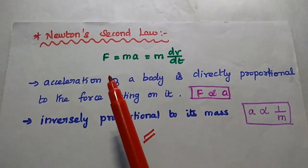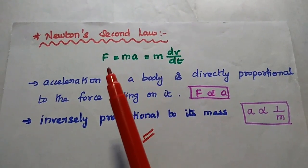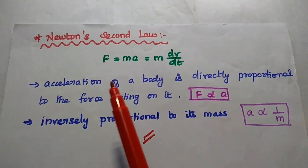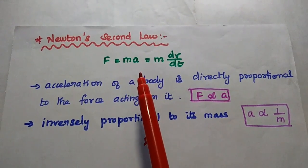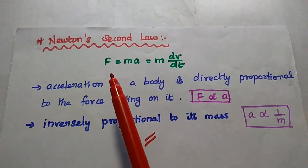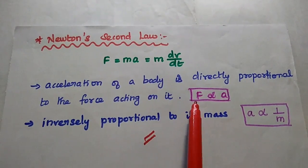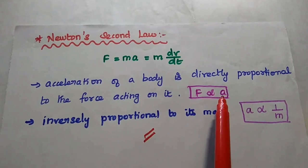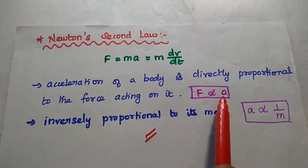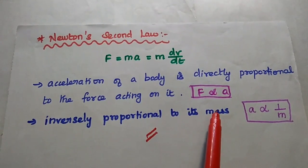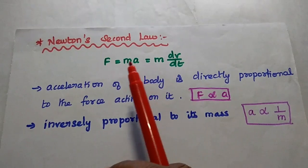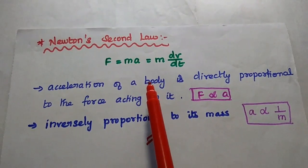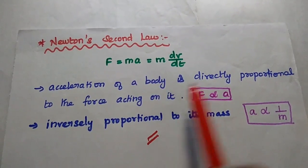The next one is Newton's second law of motion. Here we have to consider the inertial force. The acceleration of a body is directly proportional to the force acting on it — simply, F is directly proportional to the acceleration of the body. And also the acceleration is inversely proportional to its mass. That is Newton's second law of motion.